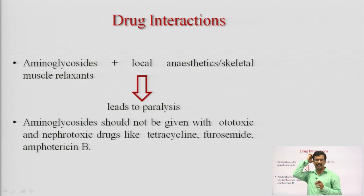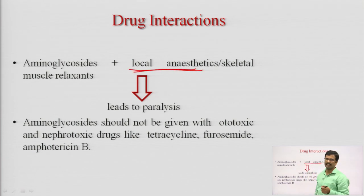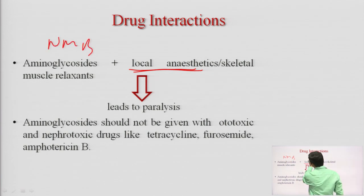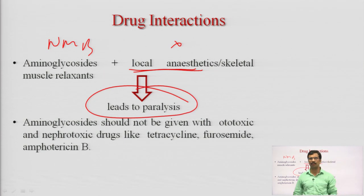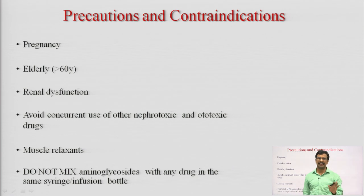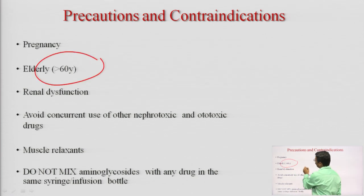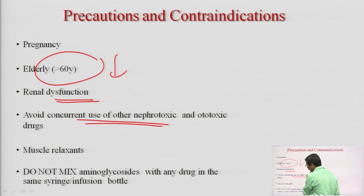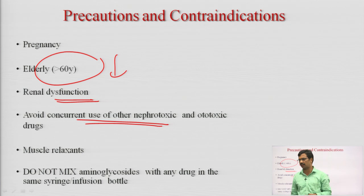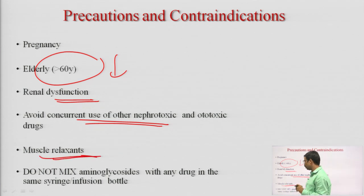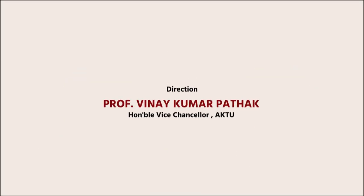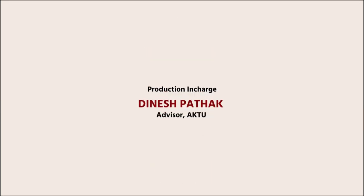Drug interactions: aminoglycosides interact with local anesthetics and muscle relaxants — since aminoglycosides are themselves neuromuscular blockers, combining them causes synergistic effect increasing the risk of paralysis. Precautions: never use in pregnancy (crosses placenta); use with caution in elderly over 60 years; taper dose in renal dysfunction; avoid concurrent use with muscle relaxants; never mix aminoglycosides with other drugs in the same syringe as they can form dangerous combinations. This concludes our discussion on aminoglycoside antibiotics. Thank you for your patience in listening.